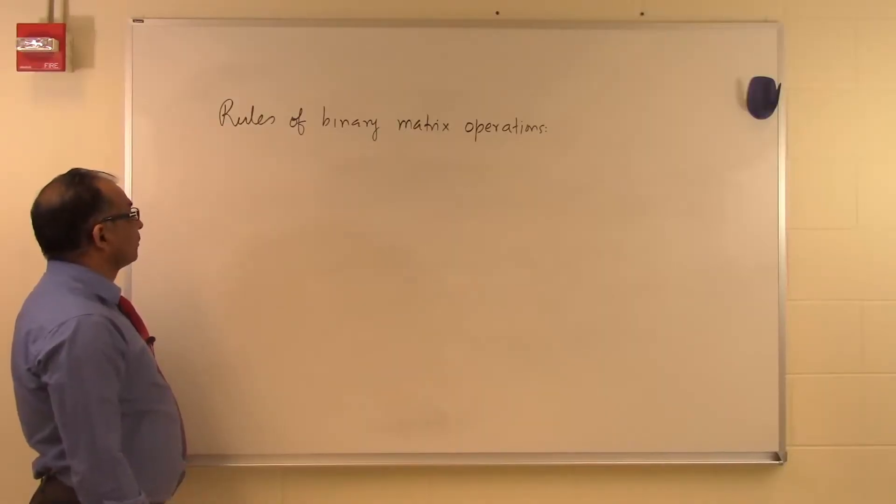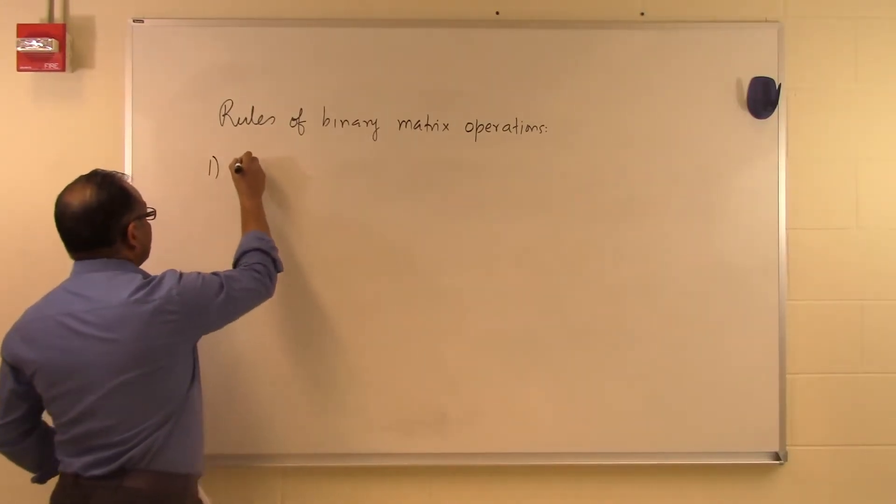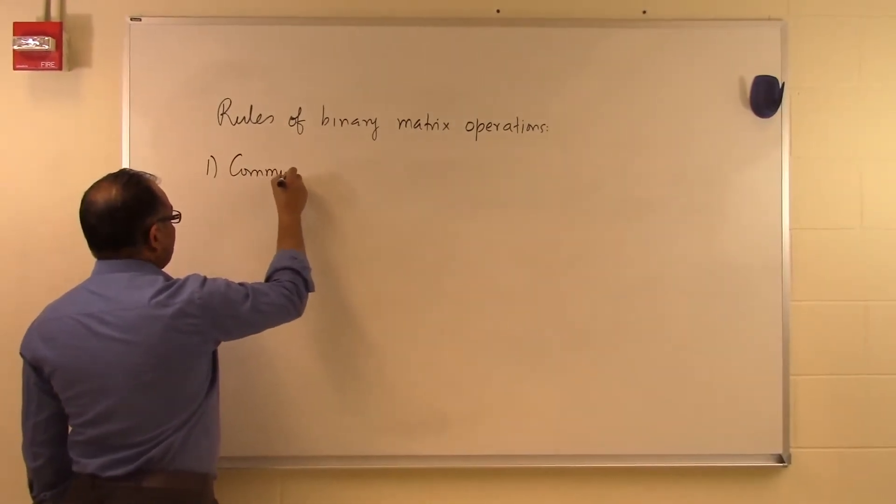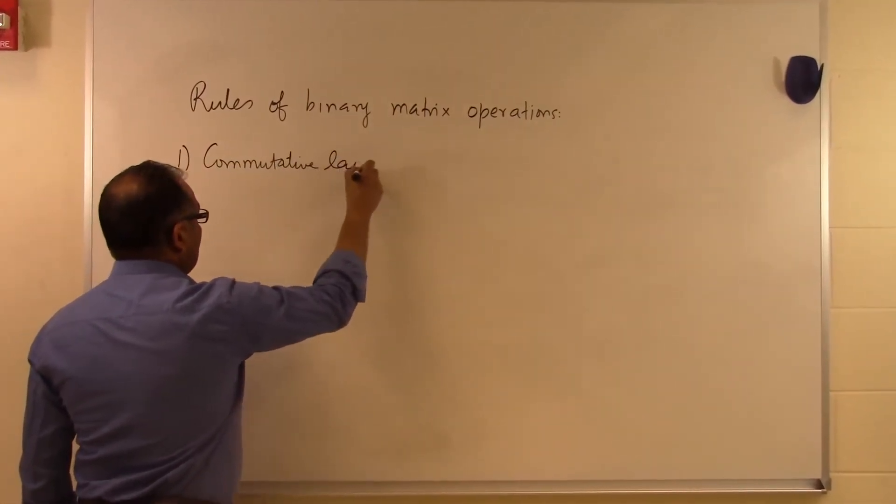In this segment, we'll talk about some of the rules of binary matrix operations. So let's look at one of them. It is called the commutative law of addition.